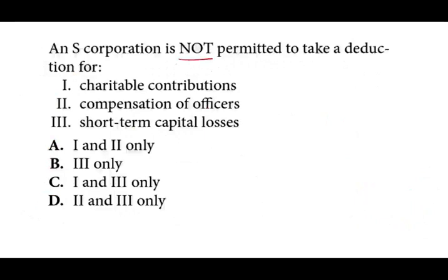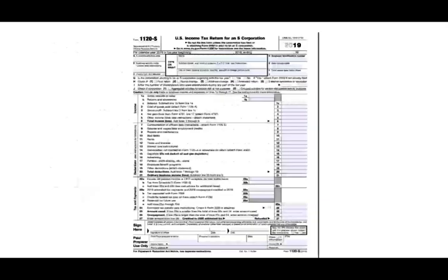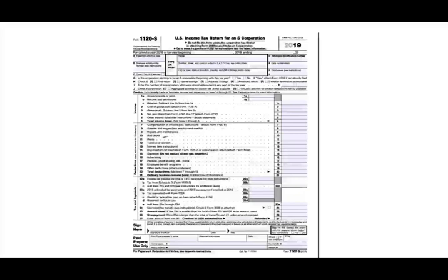An S corporation is not permitted to take a deduction for what? The best way to get familiar with this is to look at form 1120-S. Being familiar with the form will help you determine what's deductible and what's not. Deductible items include: compensation of officers, salaries and wages, repairs, maintenance, bad debt, rent, taxes and licenses, interest, depreciation, depletion, advertising, pension, profit sharing, employee benefit programs, and other deductions.